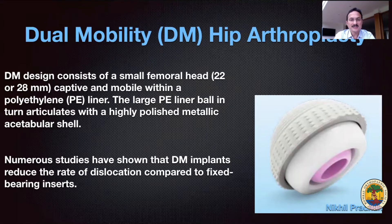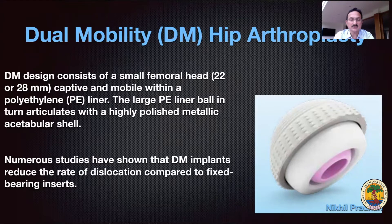The dual mobility design concept uses a small head which is captive within a large polyethylene, and the large polyethylene in turn articulates with a polished metallic acetabular shell, which can be either cemented or uncemented into the acetabulum. Numerous studies have shown that the DM implant reduces the rate of dislocation to near zero as compared to fixed bearing inserts.